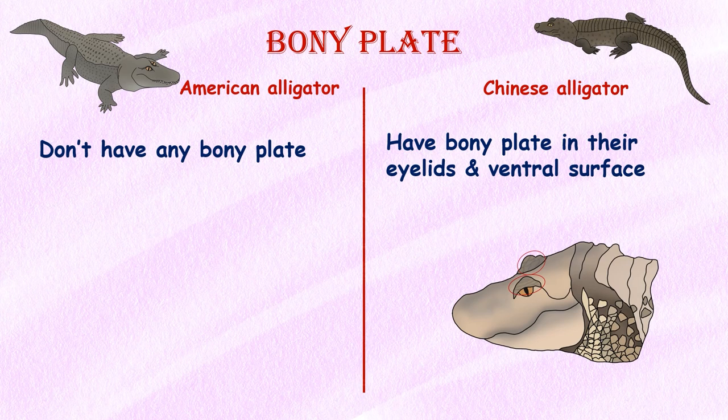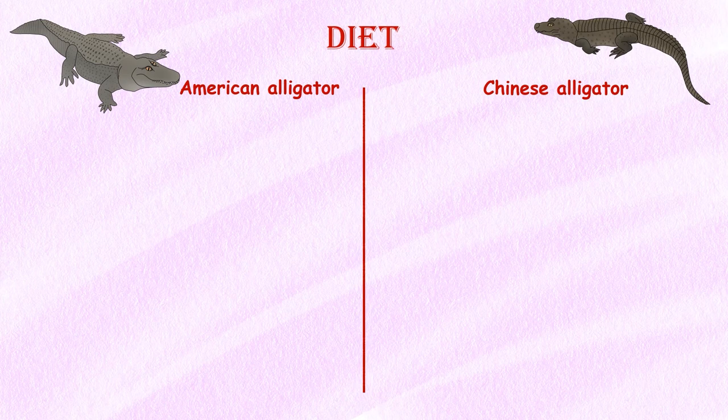Bony plate. Chinese alligators have bony plates in their eyelids and on their ventral surfaces, whereas American alligators do not.